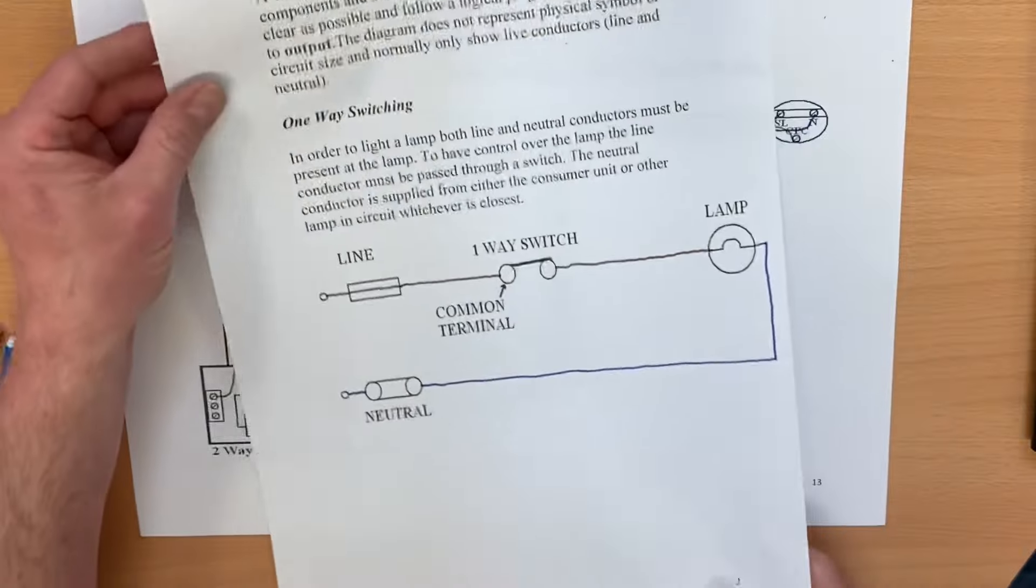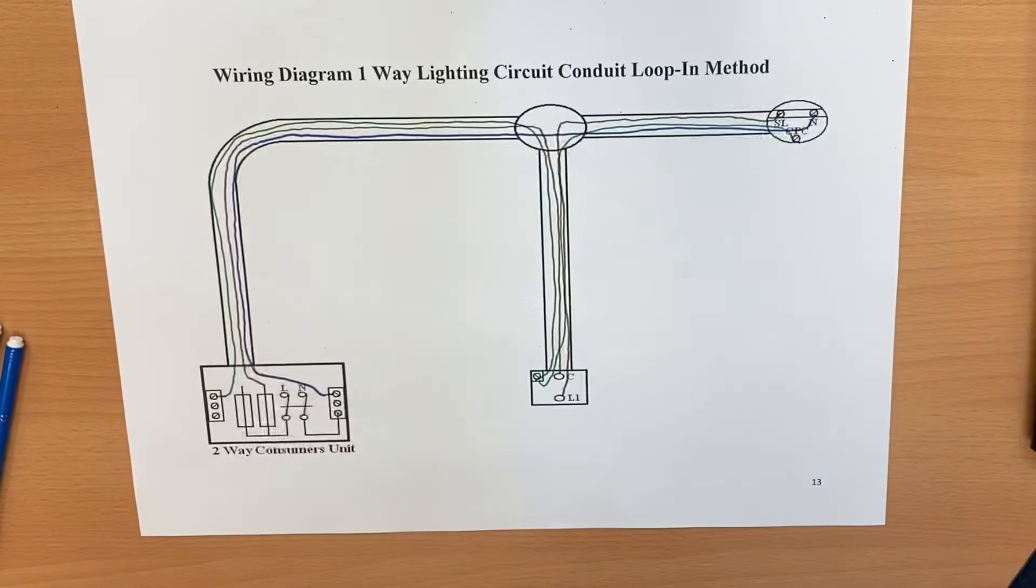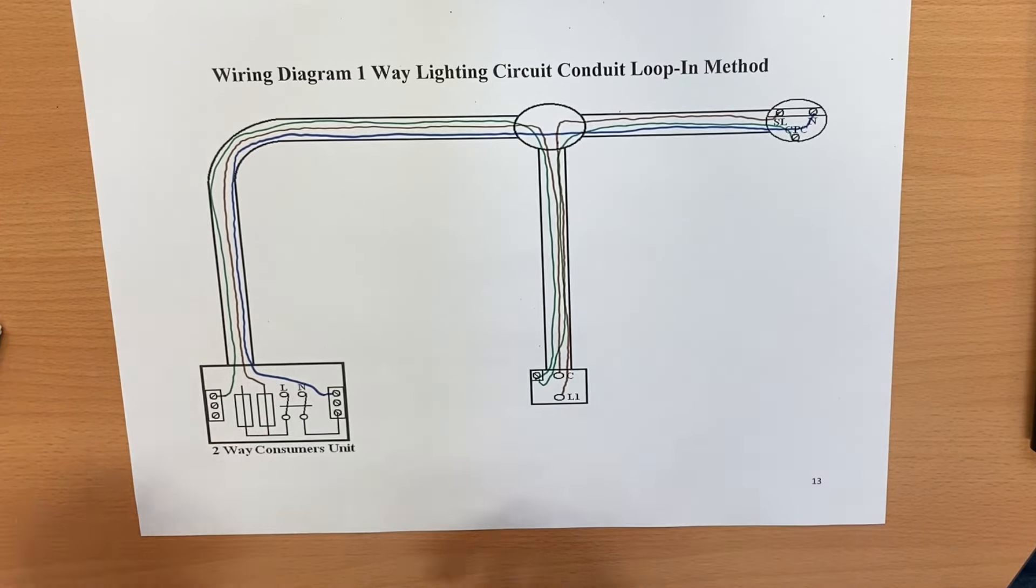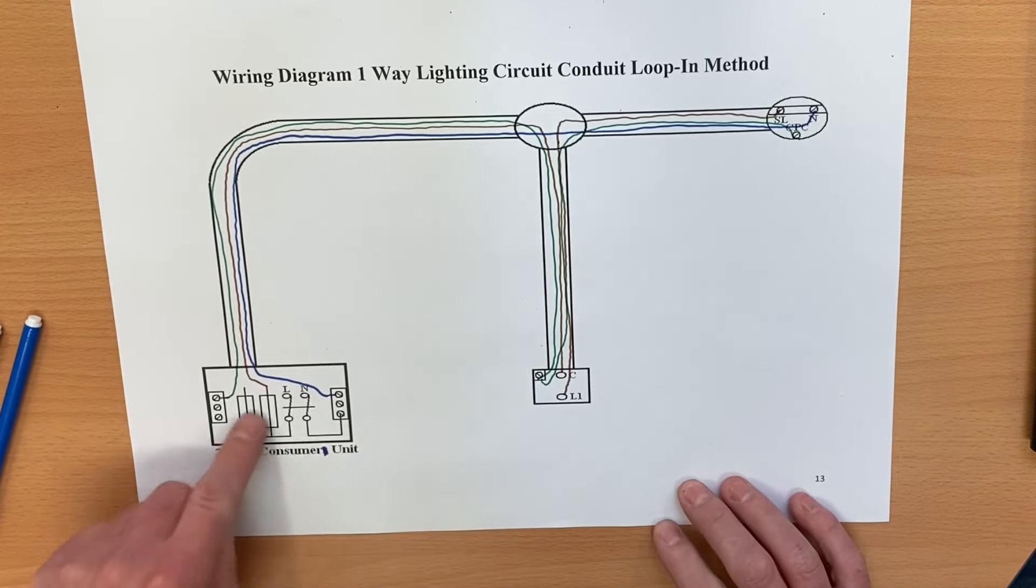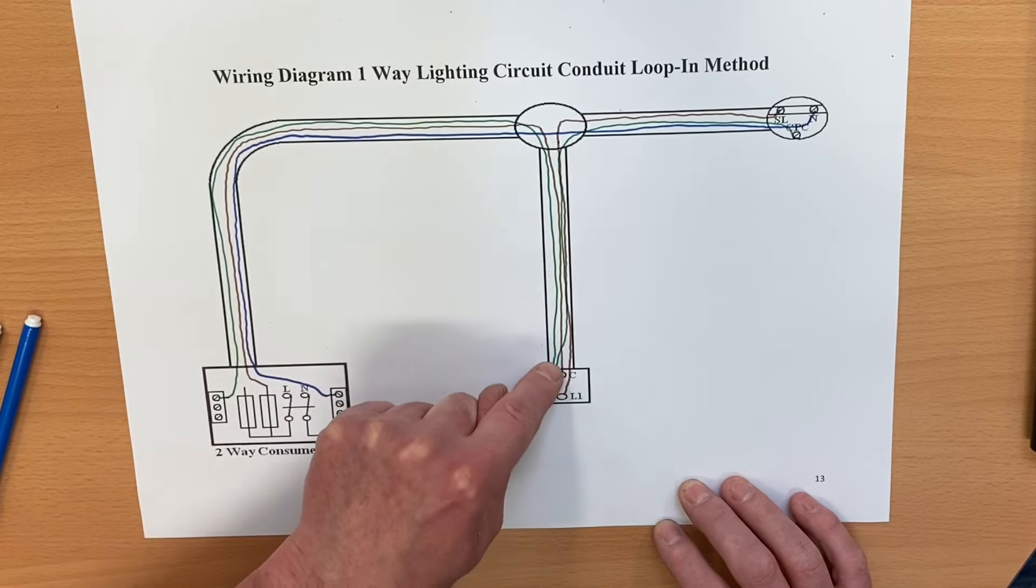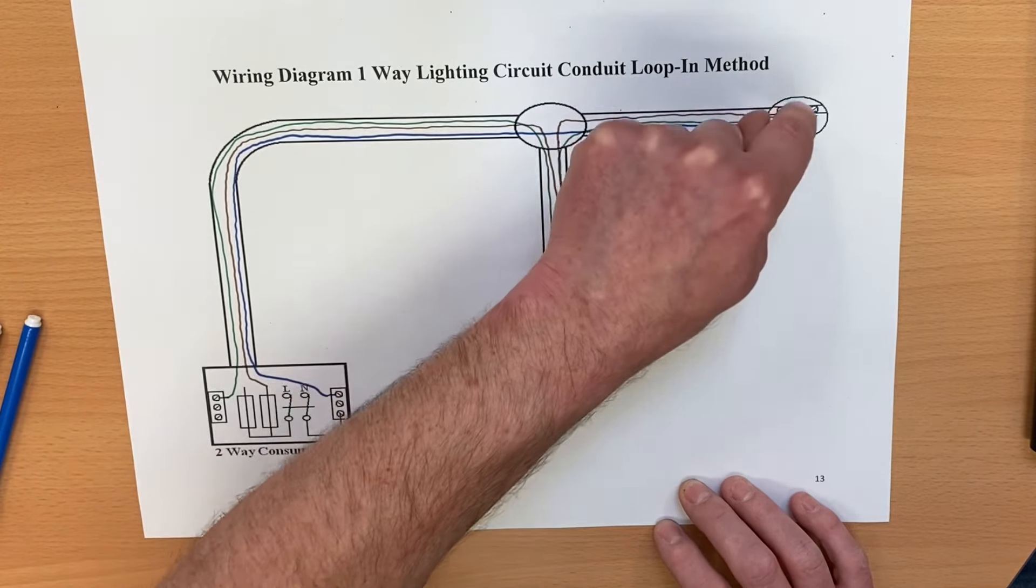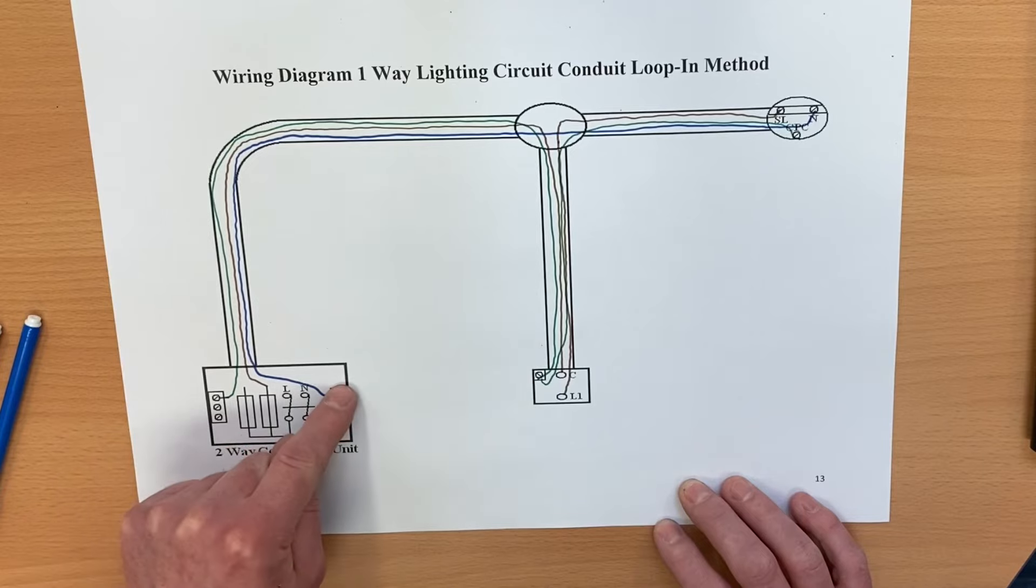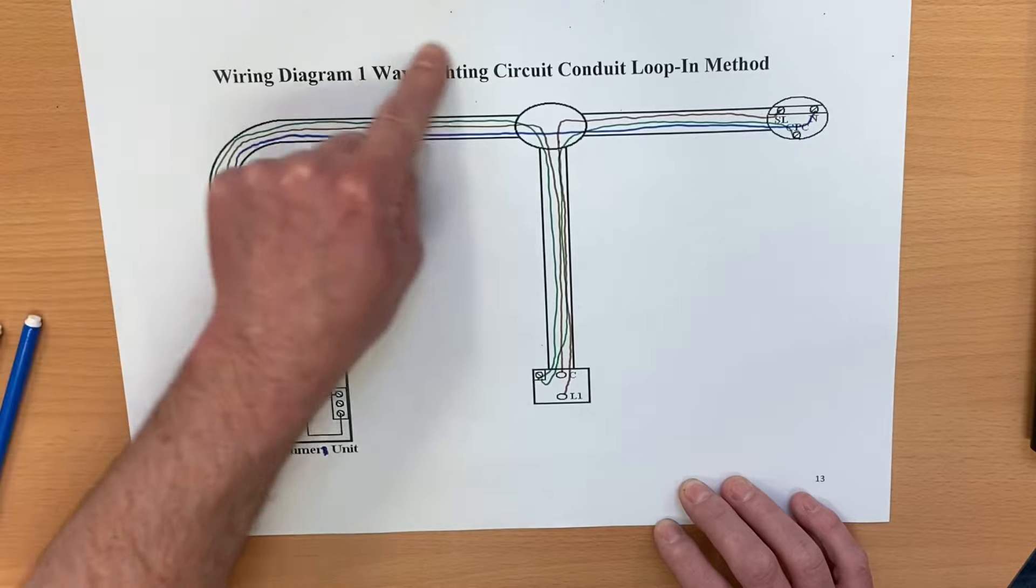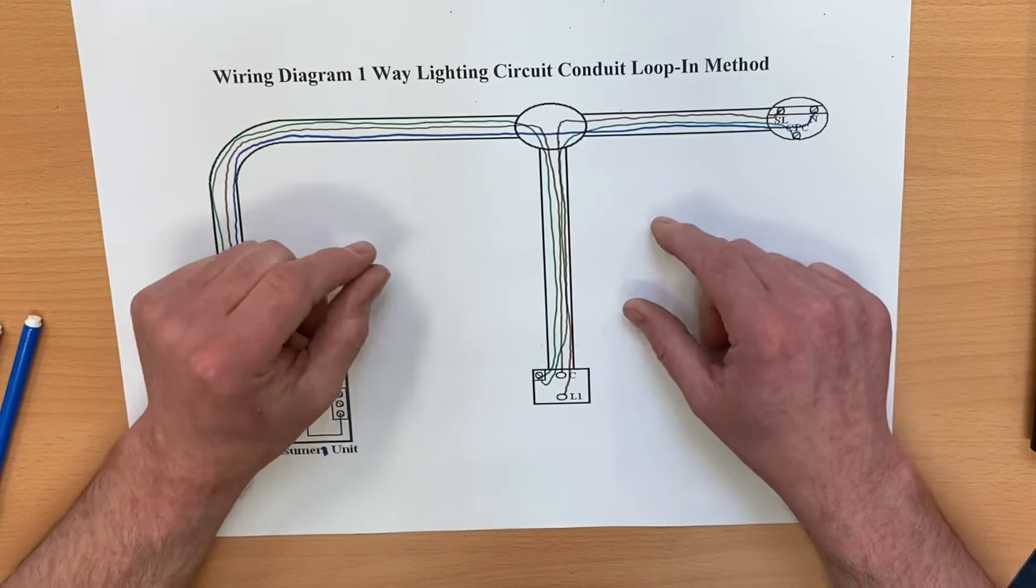Let's just recap that then. We used neutral one, CPC one, and the breaker number one in our consumer unit. We need to come through our system itself, so we bring our line conductor through down to our switch into the common. We have our switching line from L1 up to our lighting point. Our neutral goes directly from our consumer unit to our lighting point. Our CPC takes a logical route around the system in order that it gets to every point.